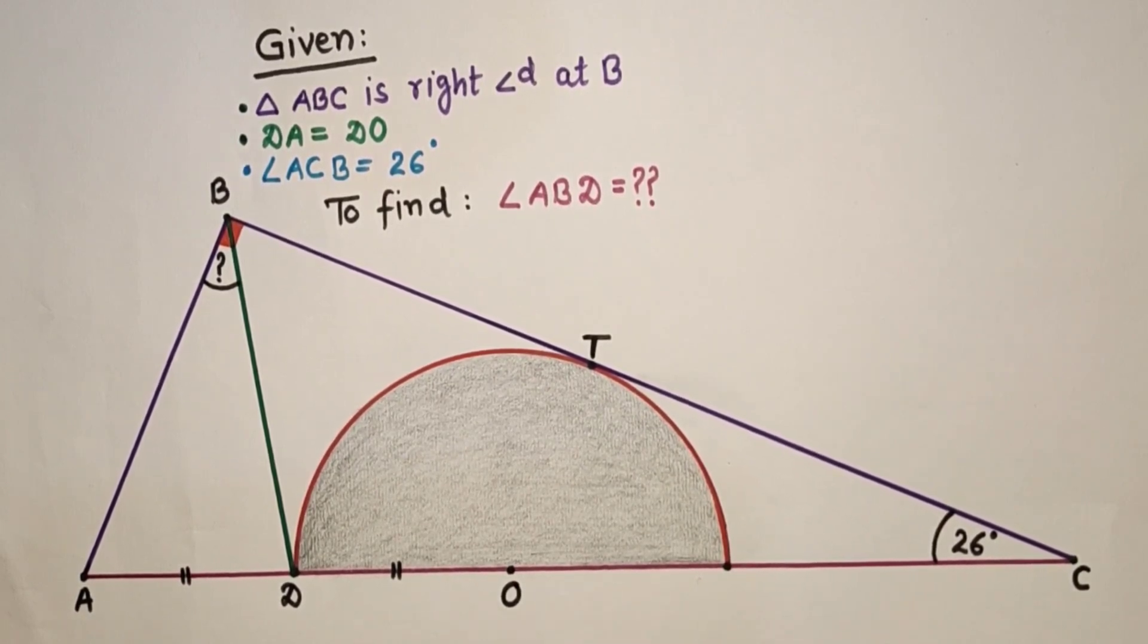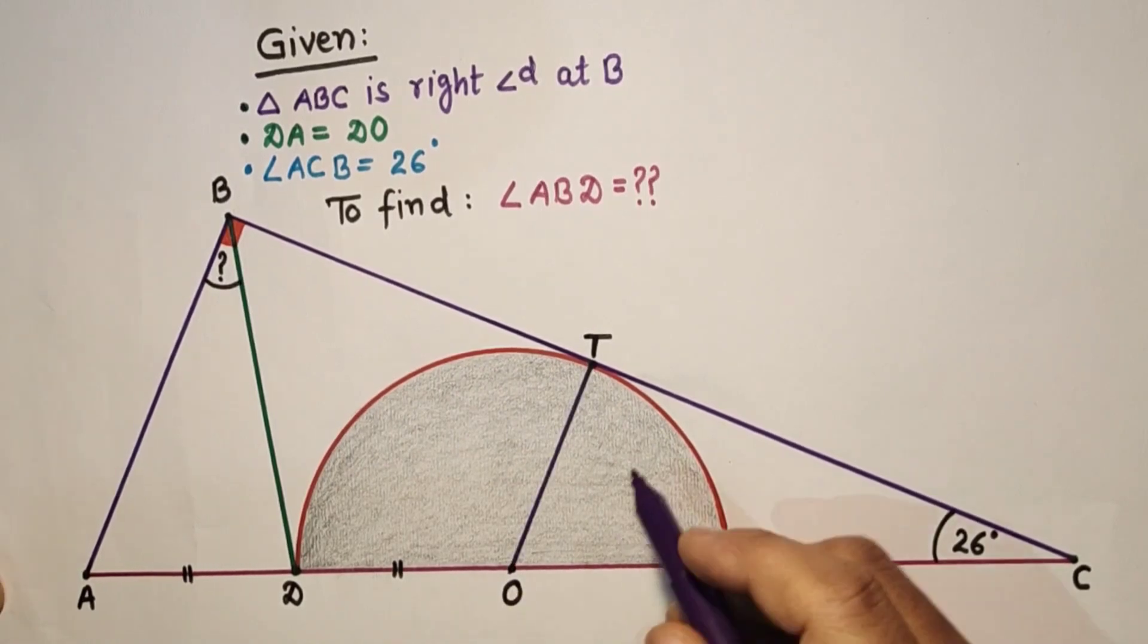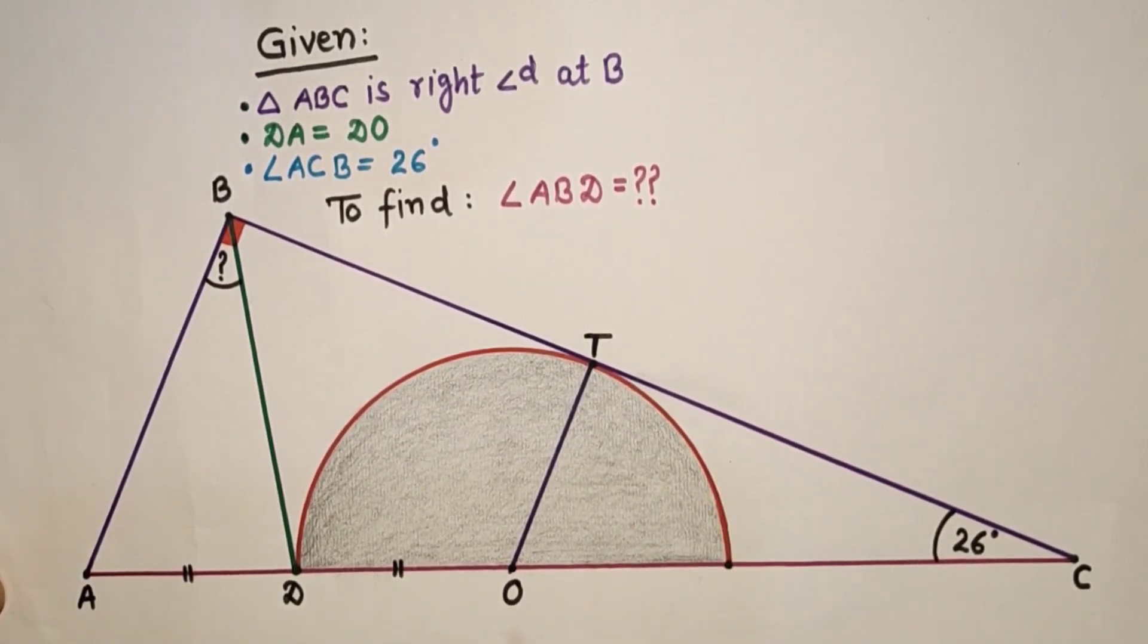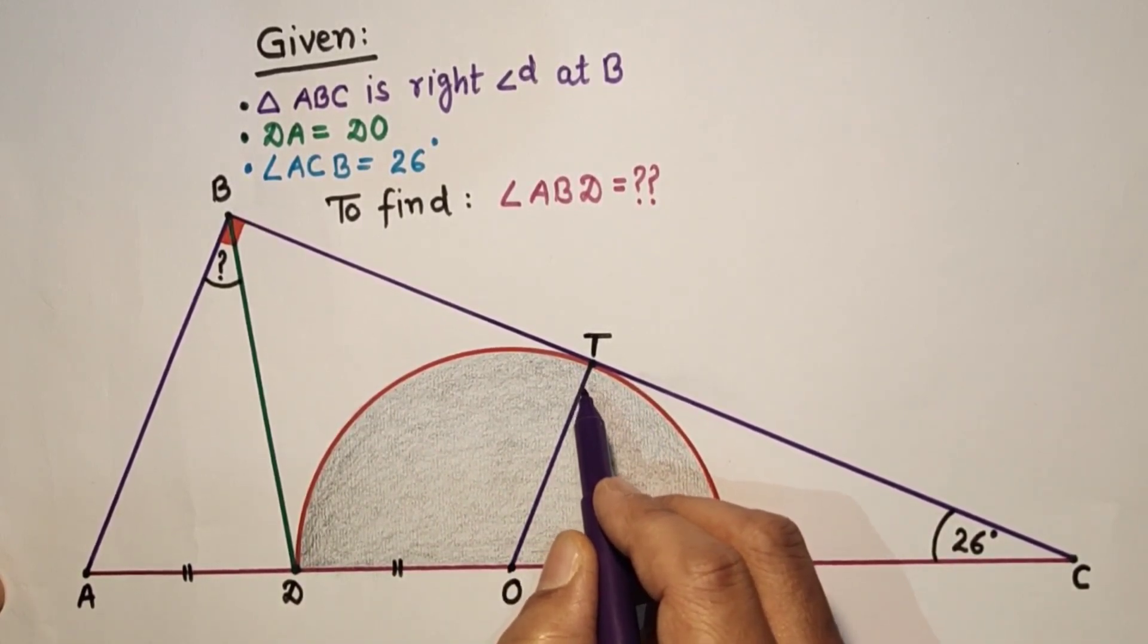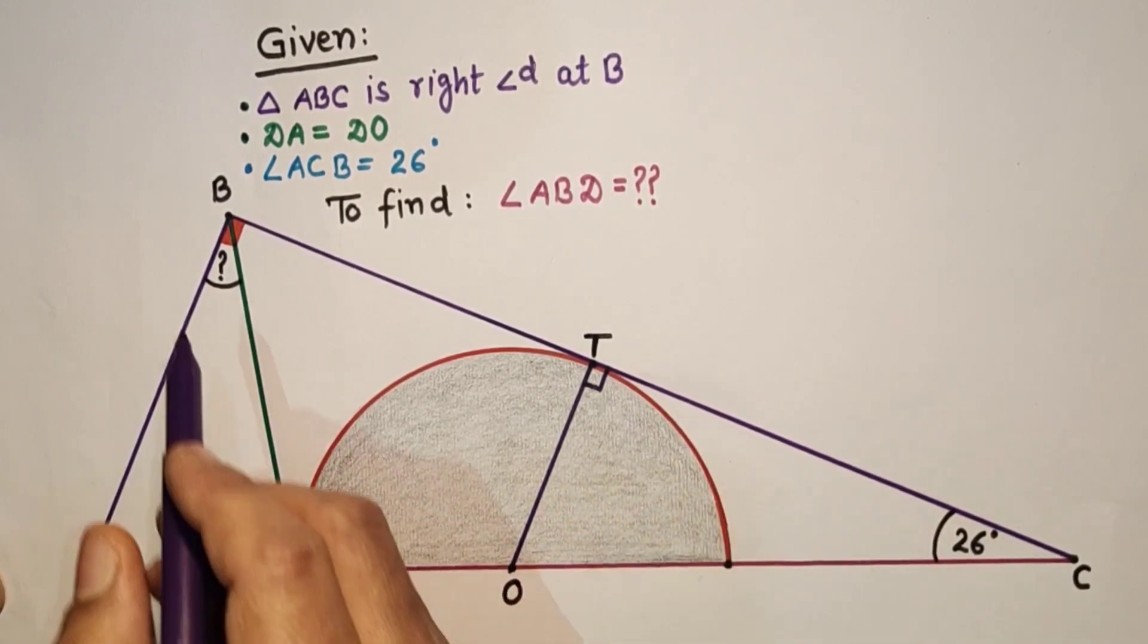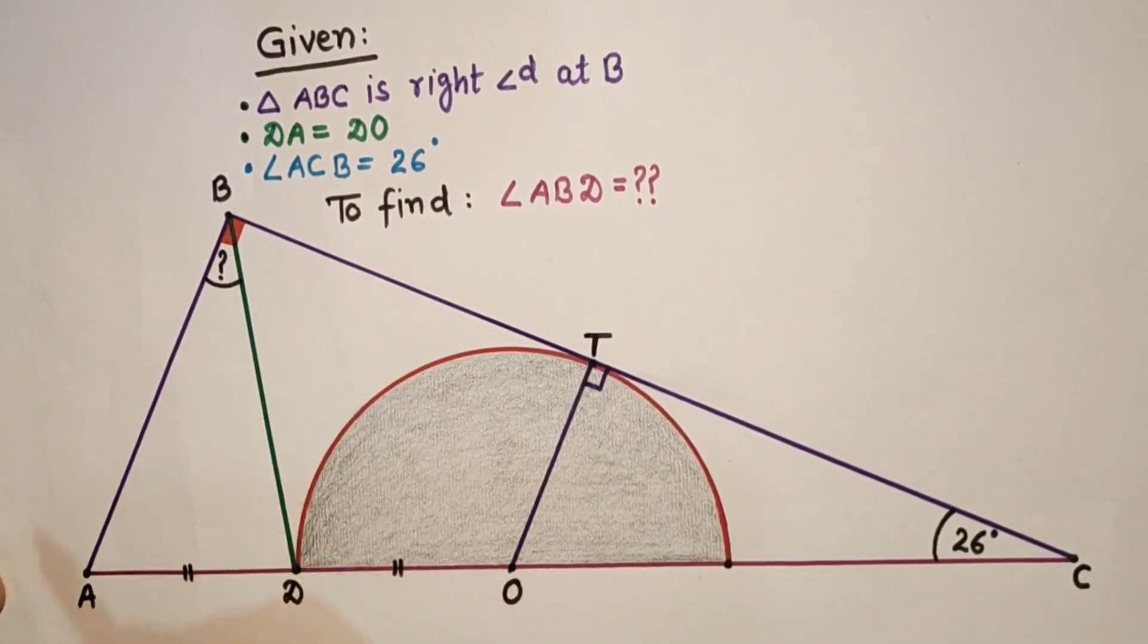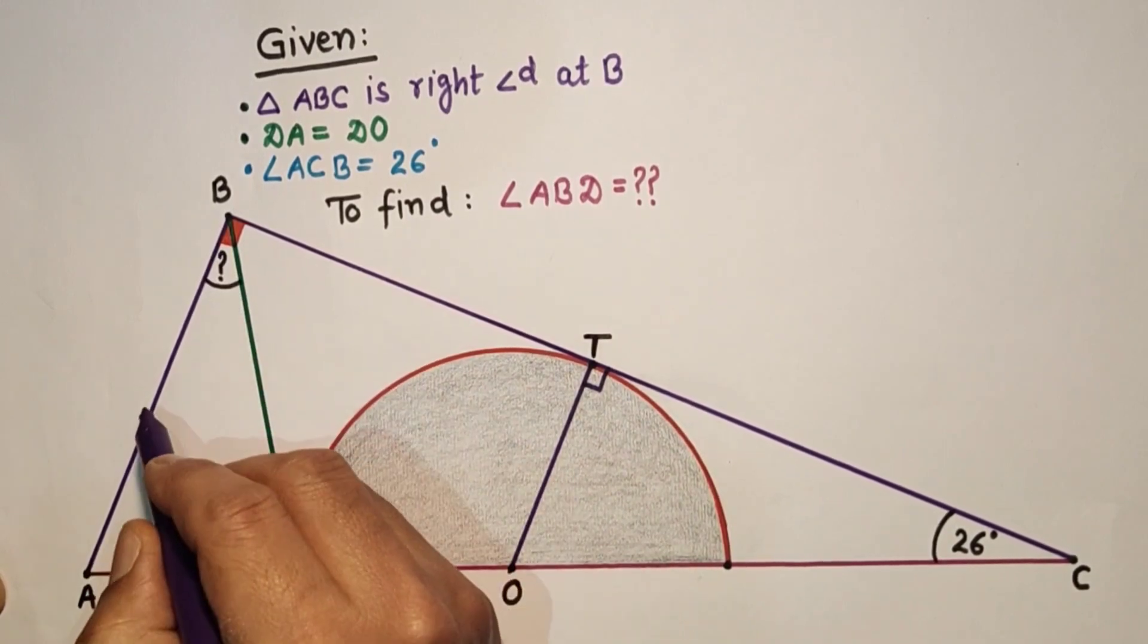We have to find the value of angle ABD. Before this, we need some constructions. In constructions, join OT, since radius and the point of contact where the tangent touches the circle, if we join radius and tangent, the point of contact will be perpendicular. So this is 90. And this is given 90. Angle ABC is 90. Therefore, OT and AB are parallel.